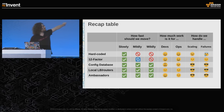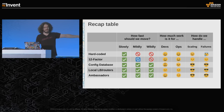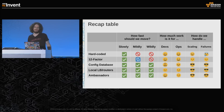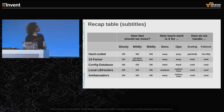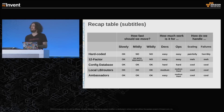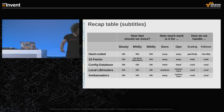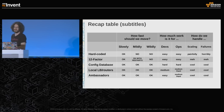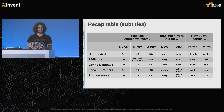A recap table of the different strategies: hardcoded configuration, 12-factor, config database, local load balancers, ambassadors. With emojis indicating whether developers and ops are happy or sad and what happens when things go wrong. In plain English: with ambassadors, things are mostly fine for both devs and ops, except we haven't really discussed what it's like for ops to actually implement the ambassador pattern. We don't want to just push the bump in the carpet — let's see what implementing ambassadors actually looks like.